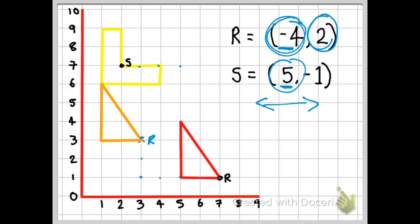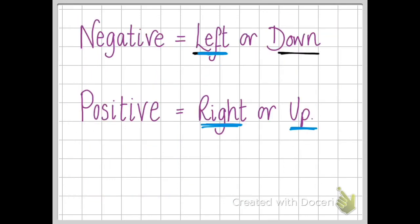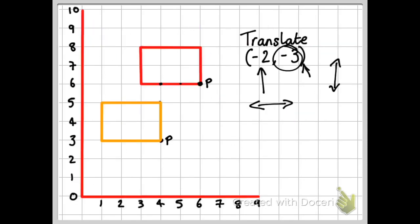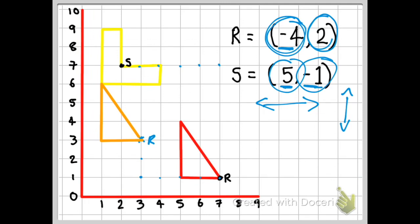So one, two, three, four, five. And the second number decides if we go up or down on the vertical plane. So it is minus one. So if I go back to my guide, I can see that if it's a negative number, I'm going to be going down by one. So that is the new position of S.